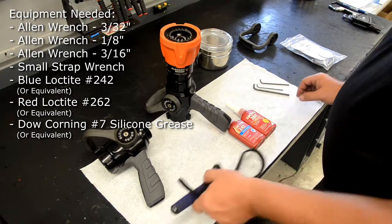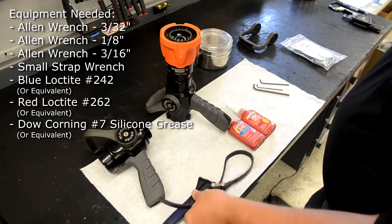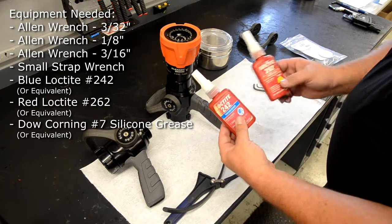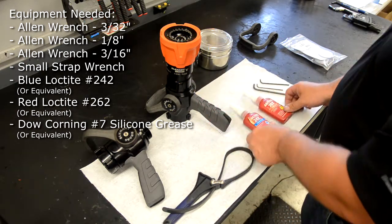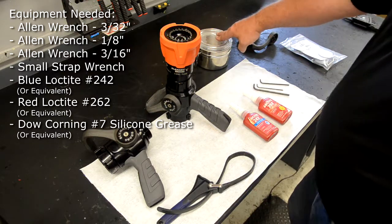You'll also need a small strap wrench, blue Loctite 242 or equivalent, red Loctite 262 or equivalent, and Dow Corning No. 7 silicone grease or equivalent.